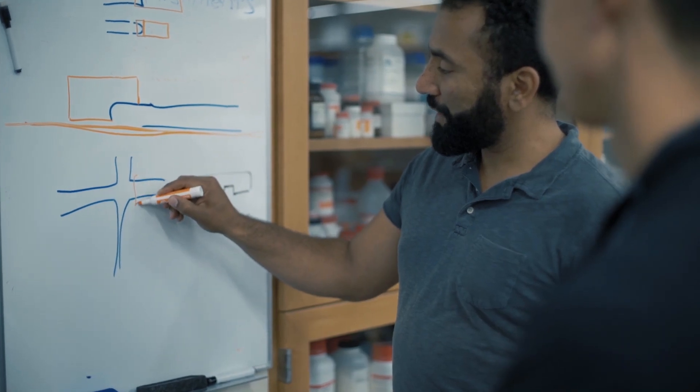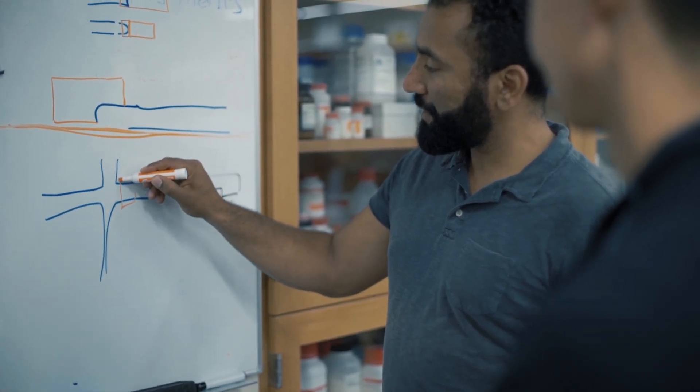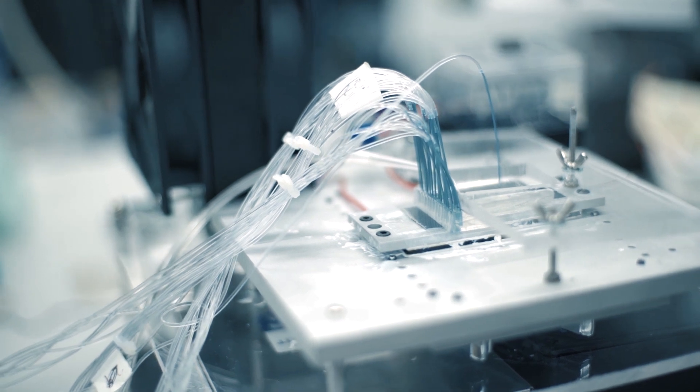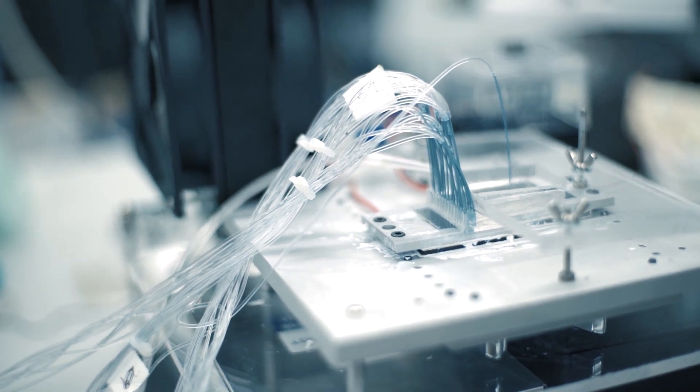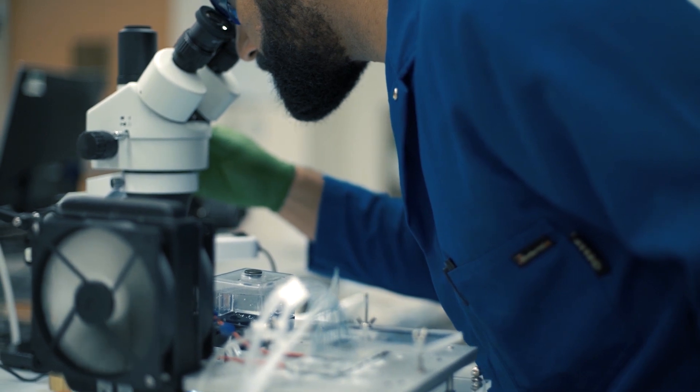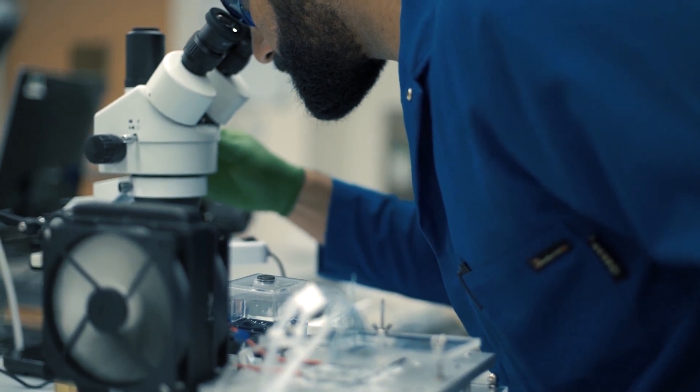Microfluidic devices are essentially the fluidic analog of the integrated circuit. In the same way that computer chips can manipulate bits to do computational experiments, a microfluidic device can manipulate cells or chemical reagents to do really high-throughput experiments in an automated fashion. This allows us to probe many single cells at the same time.